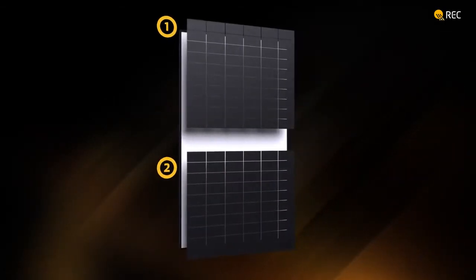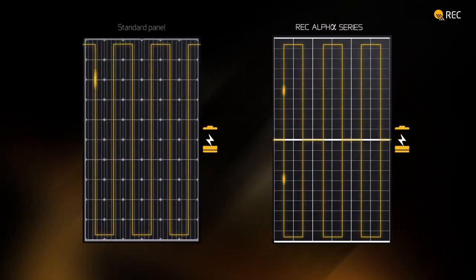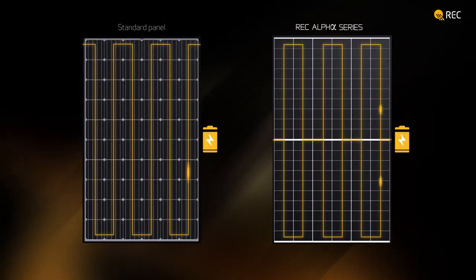The REC Alpha uses REC's pioneering and award-winning twin design, where we divide the panel into two identical sections. This splits the current as it enters the panel, reducing resistance losses by a factor of four to give you greater power output.